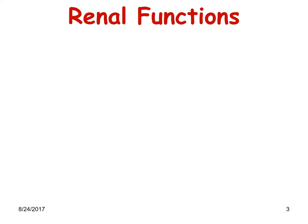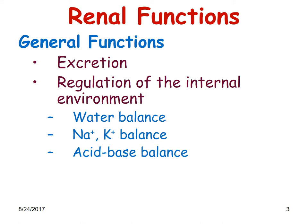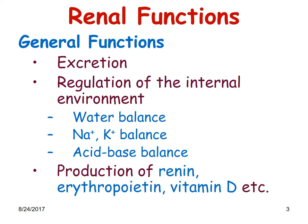Before we go on to glomerular filtration, let us look at some of the renal functions. General functions include excretion, regulation of the internal environment — that is water balance, sodium and potassium balance, as well as acid-base balance, which helps in maintaining the normal pH of blood. Apart from this, it also helps in production of renin, erythropoietin, and vitamin D.